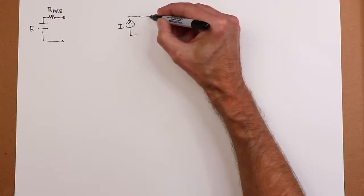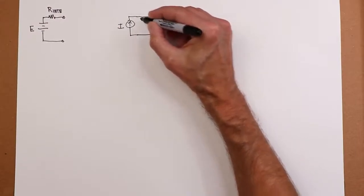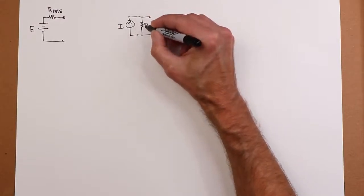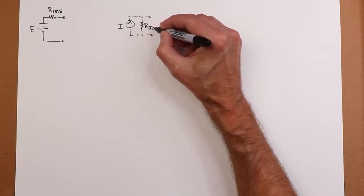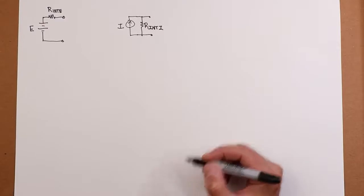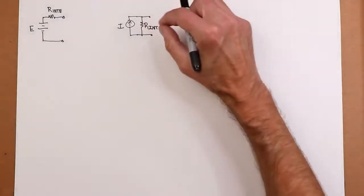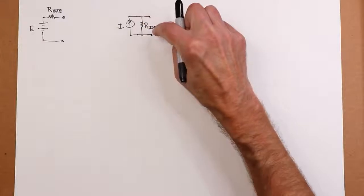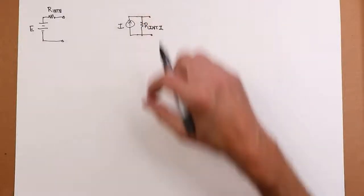Similar situation over here with the current source, except now it's in parallel. So I'll introduce this R internal I. Same thing. If this is wide open, the current still flows through R internal I, and that sets up the maximum voltage.